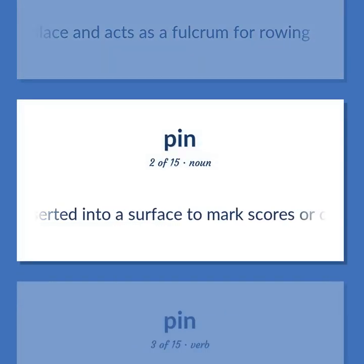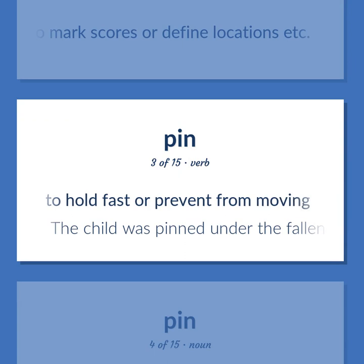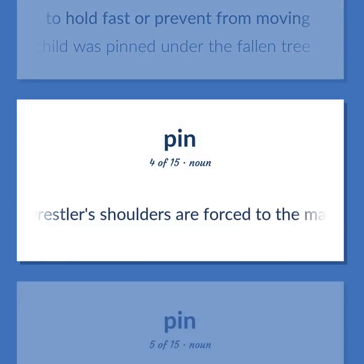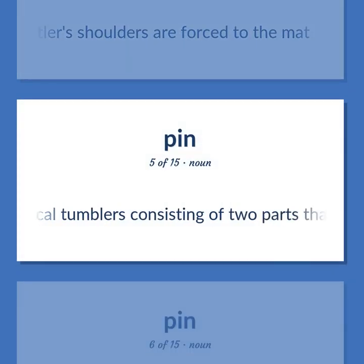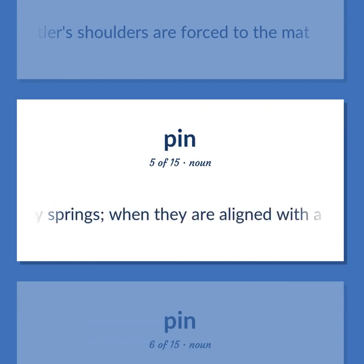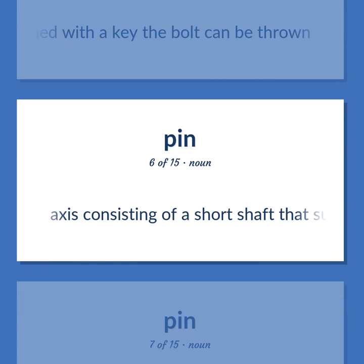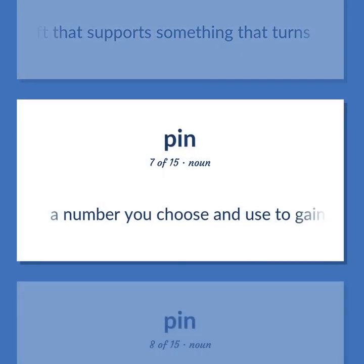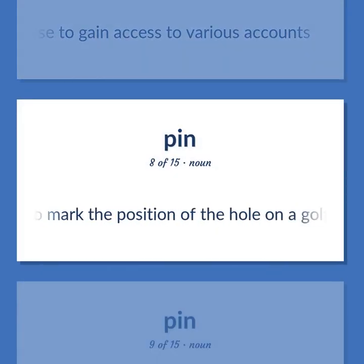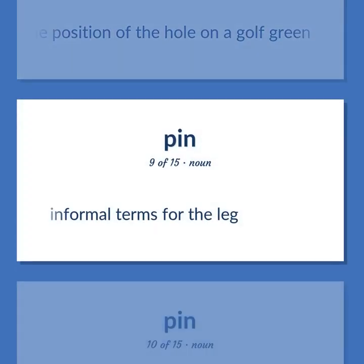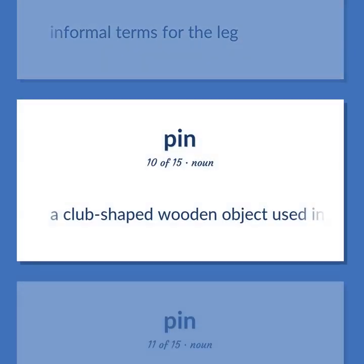Pin: small markers inserted into a surface to mark scores or define locations. To hold fast or prevent from moving — 'The child was pinned under the fallen tree.' When a wrestler's shoulders are forced to the mat. Cylindrical tumblers consisting of two parts held in place by springs; when aligned with a key the bolt can be thrown. Axis consisting of a short shaft that supports something that turns. A number you choose and use to gain access to various accounts — PIN. Flagpole used to mark the position of the hole on a golf green. Informal terms for the leg. A club-shaped wooden object used in bowling, set up in triangular groups of 10 as the target.